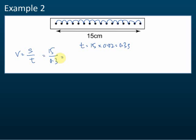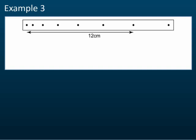Therefore, the velocity is 15 divided by 0.3, which equals 50. So that is how we find the velocity — it's very easy. Just take the distance divided by the time taken, where the time is found by counting the number of ticks.